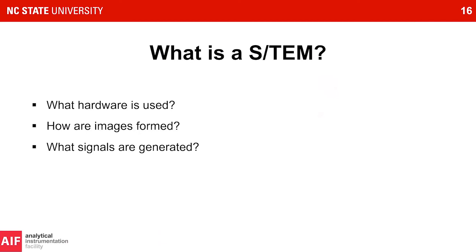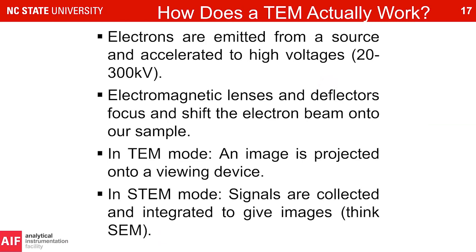What is a scanning or transmission electron microscope? In brief: we have an electron source — which determines the microscope's performance — we generate electrons and accelerate them to high voltages, somewhere between 20,000 and 300,000 electron volts. We use lenses and deflectors to focus and shift the electron beam. In TEM mode, we generate an image and project it onto a viewing device. In STEM mode, we raster a very small probe over our sample and generate signals that we integrate to form images — operating much like an SEM.